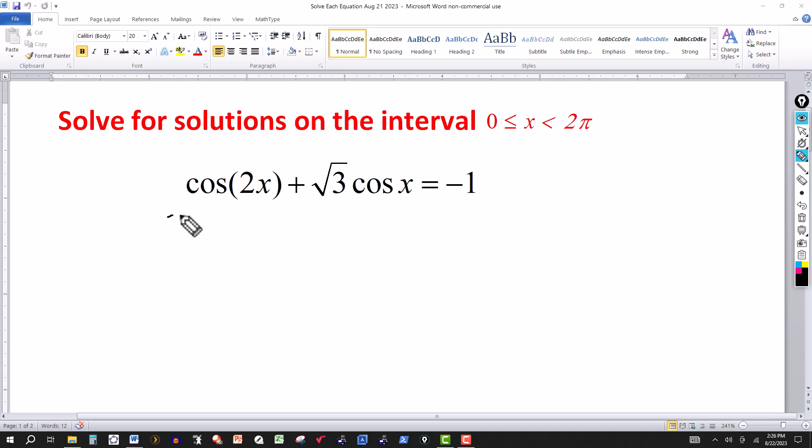So there's an identity for cosine of 2x that allows me to write it as two cosine squared of x minus one.